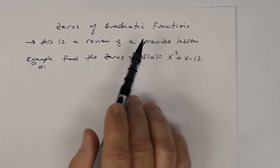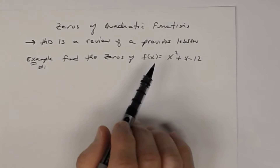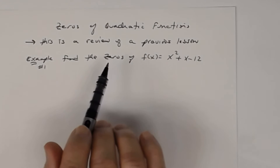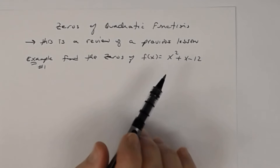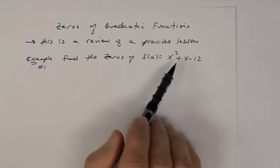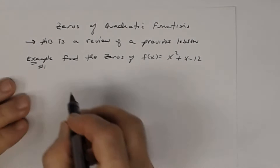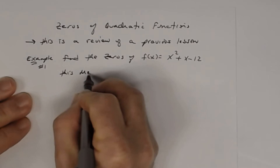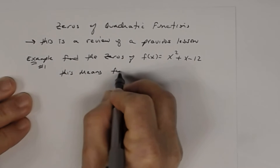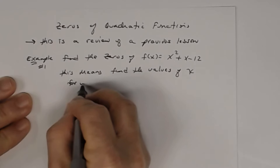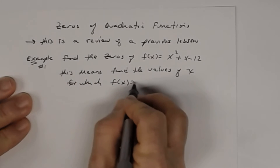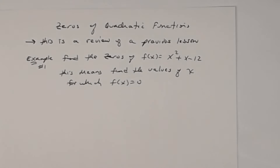Remember, a quadratic function is a polynomial function. To find the zeros of a quadratic function means to determine what values of x make f of x equal to zero. This means: find the values of x for which f of x is equal to zero.